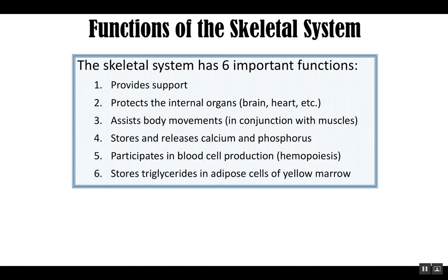The last function is that bones also have a large amount of fat in them. There's a number of adipocytes inside bone, and we call this kind of cluster of adipocytes yellow bone marrow, or yellow marrow. This yellow marrow accumulates with age, so as we age we get more and more yellow bone marrow.